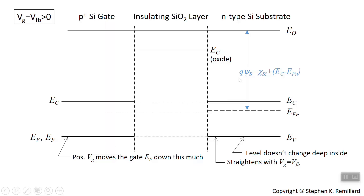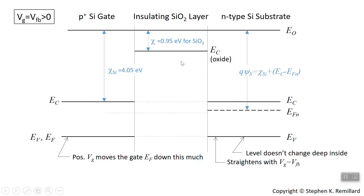The valence bands flatten out. The work function in the N-type is now written in terms of the quasi-Fermi energy level. The work function of silicon is the electron affinity (4.05 eV) plus the difference E sub C minus E sub Fn. That expression comes right out of the energy band diagram. The electron affinity in the insulator remains 0.95 eV, but now it's horizontal and the vacuum level is horizontal. The work function in the gate material — the P-type degenerate semiconductor — still has the valence band and Fermi energy commensurate with each other.